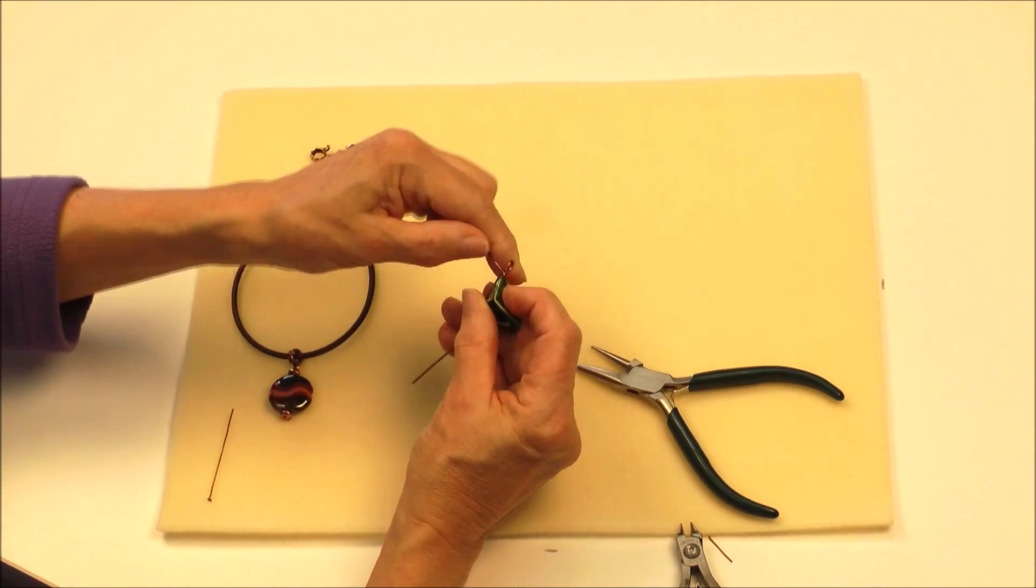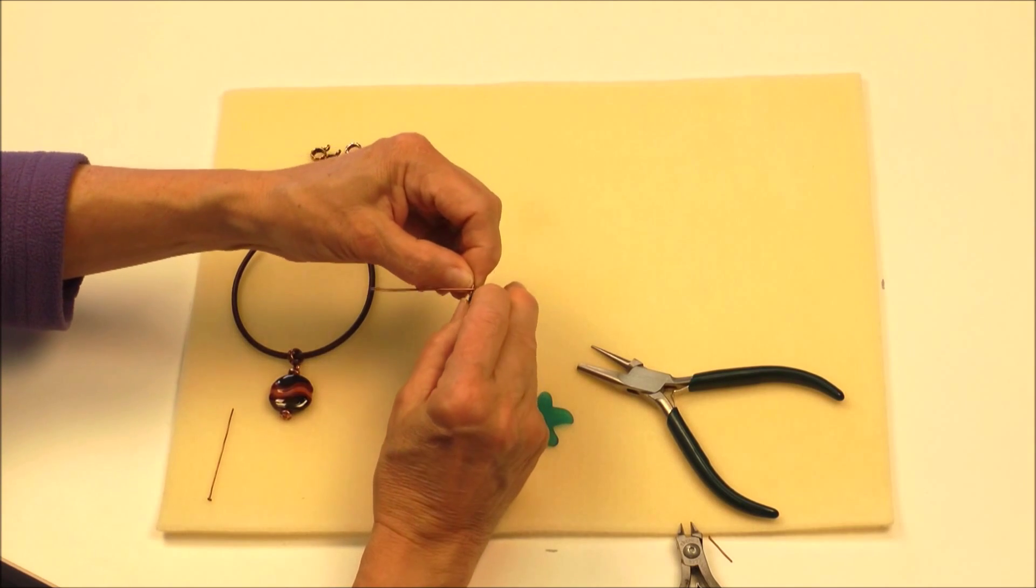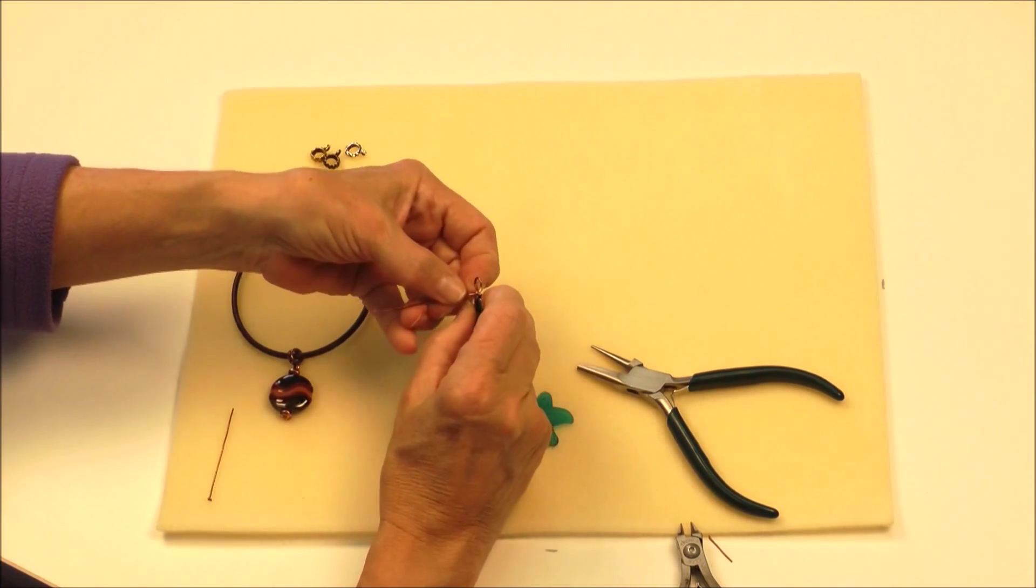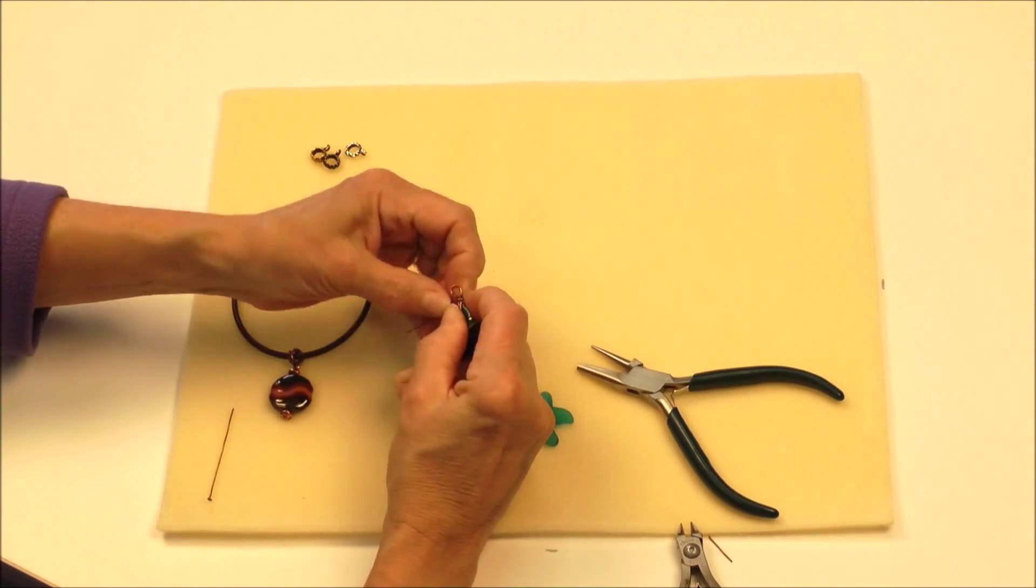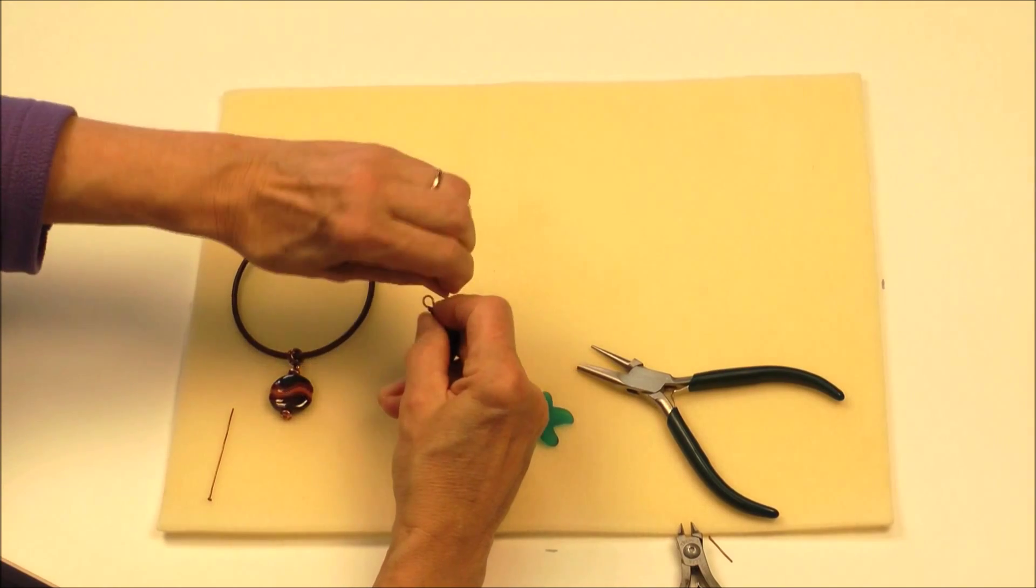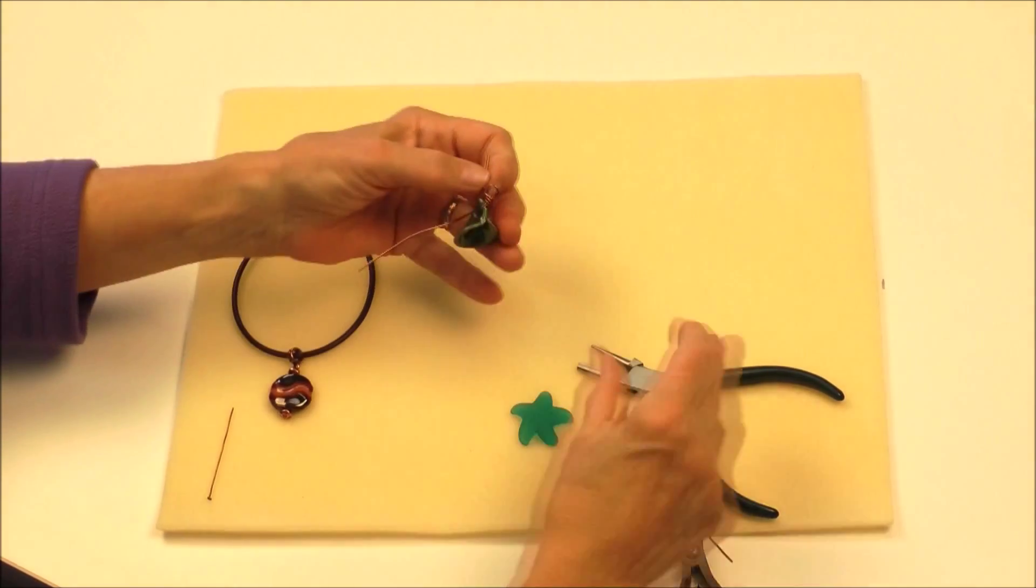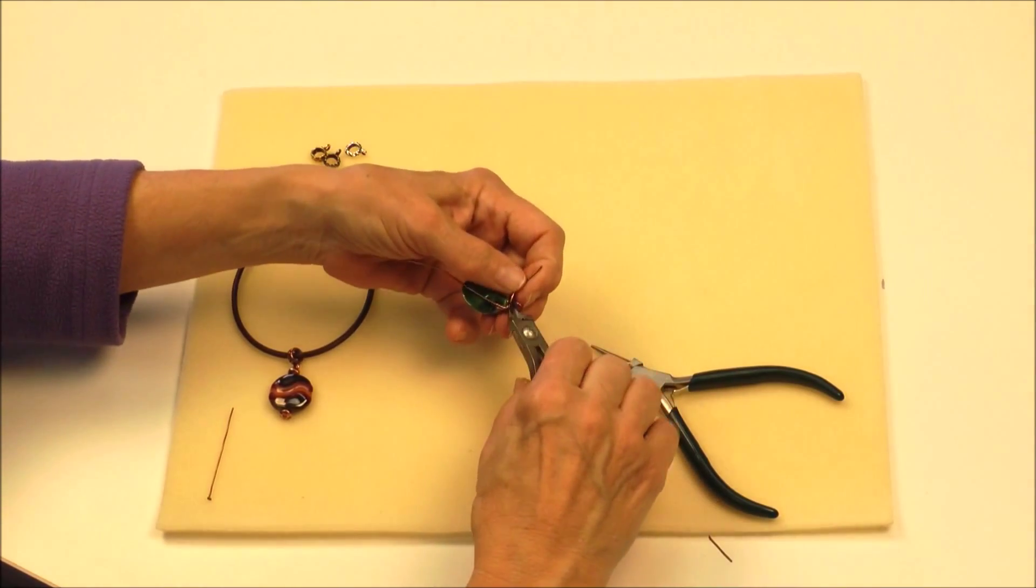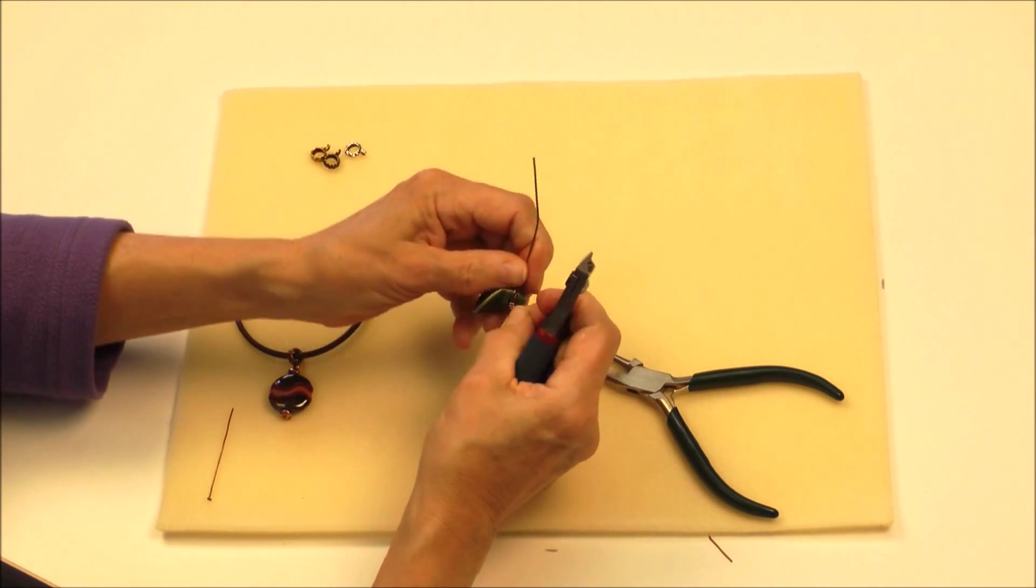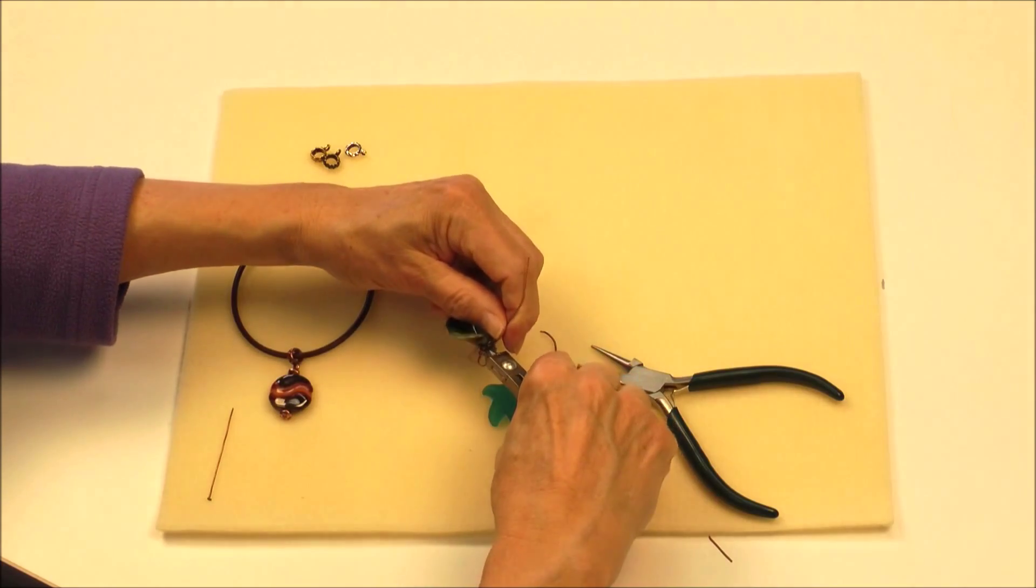The next step is to take the piece that's running horizontal and wrap it around the two pieces that are next to the loop. And I will just hold this and wrap it a couple of times. I've got something like this. I can trim off my ends and there we go.